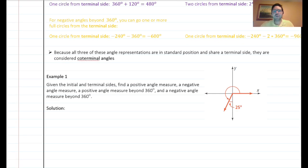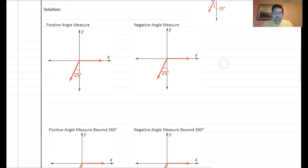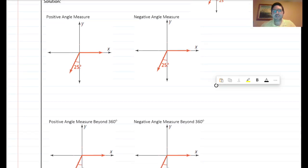Let's look at Example 1: given the initial and terminal sides, find the positive angle measure, a negative angle measure, a positive angle beyond 360, and a negative angle beyond 360 — the four representations we discussed. The diagram shows an angle between the negative y-axis and the terminal side, with 25 degrees given in that gap.